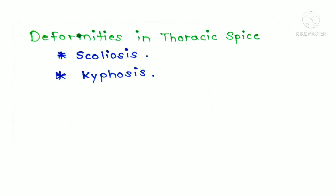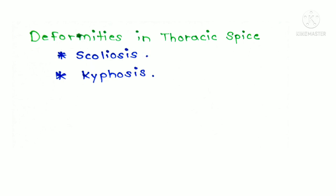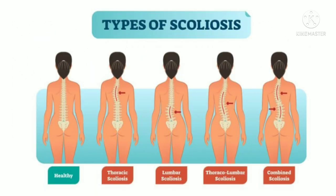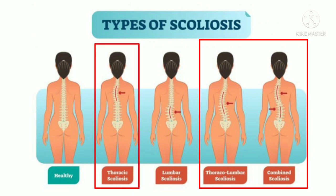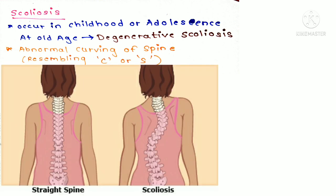Moving on to thoracic vertebral deformities, the first is scoliosis. There are different types of scoliosis depending on which region of the vertebral column is curved. In this video we focus on thoracic scoliosis, as it is related to the thorax region. Scoliosis is an abnormal curving of the spine which resembles the letter S or C. It can occur in childhood or in old age, the latter being called degenerative scoliosis.